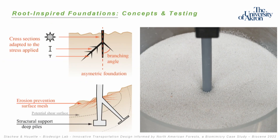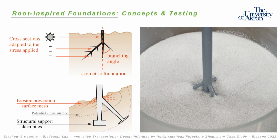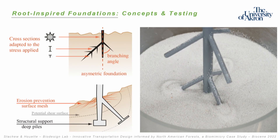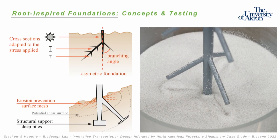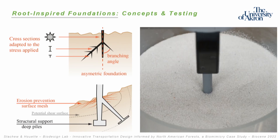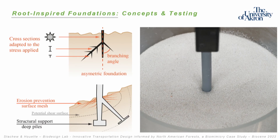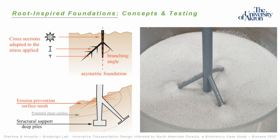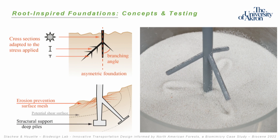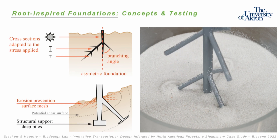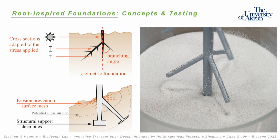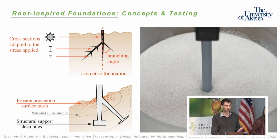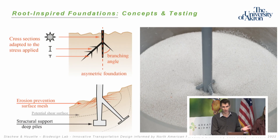For the foundation systems, we're extracting traits from the root systems themselves, abstracting them, and transferring them to building foundations. Things we're really looking at include cross sections and how they vary throughout the entire root system, how the branching angle varies, how the bifurcation ratio between parent and offspring varies. We can also integrate multifunctionality — providing structural support but also preventing erosion, since in many cases we need to prevent erosion on coastlands and slopes.